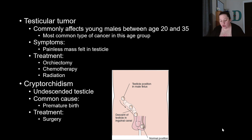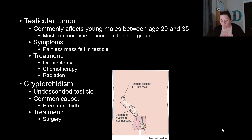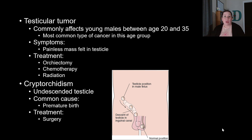Treatment for testicular tumors is an orchiectomy — surgical removal of the affected testicle — followed by chemotherapy and radiation. The unaffected testicle is left intact, so the male is not rendered sterile or impotent as long as one testicle remains functional. Males may choose to bank sperm before surgery. The cure rate for testicular cancer is approximately 90%.